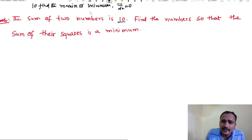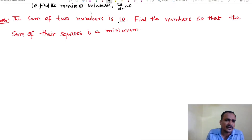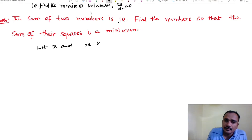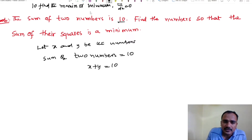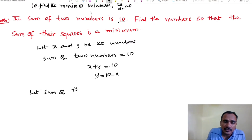Problem 2: The sum of two numbers is 10. Find the numbers so that the sum of their squares is minimum. Let x and y be the numbers. Sum of two numbers equals 10, so x plus y equals 10, giving y equals 10 minus x. Let the sum of their squares be S.